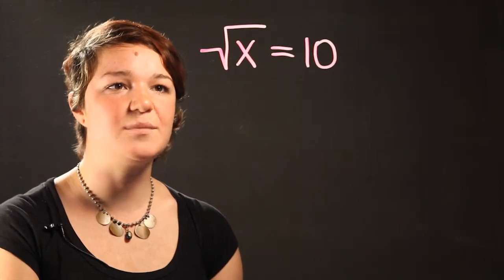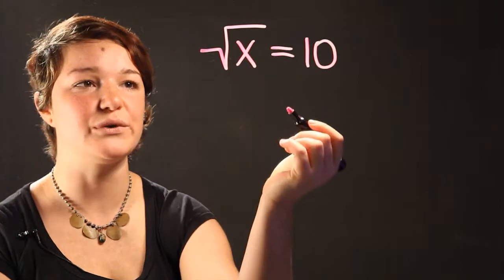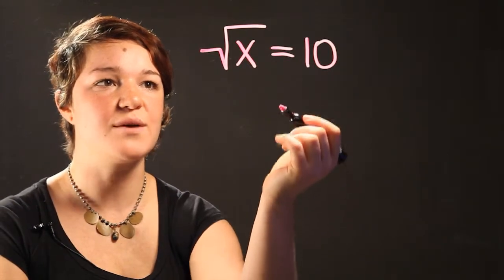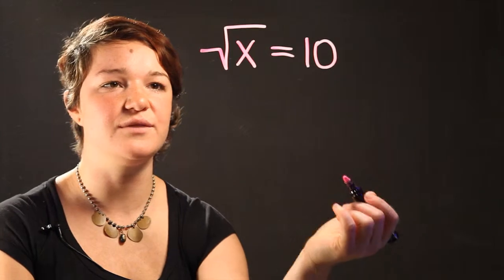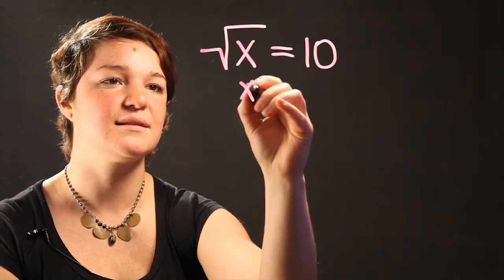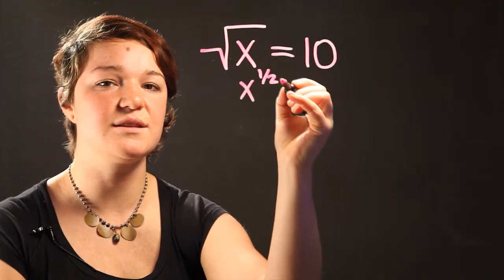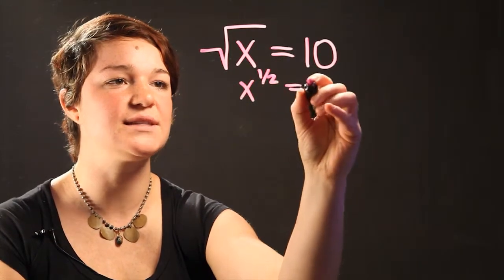Well the first step is to realize that the radical of x is the square root. So right away you can just say that x is equal to 100, but if you don't understand that, then we're going to say that the radical of x is the same as saying that it's x to the 1 half power, equals 10.